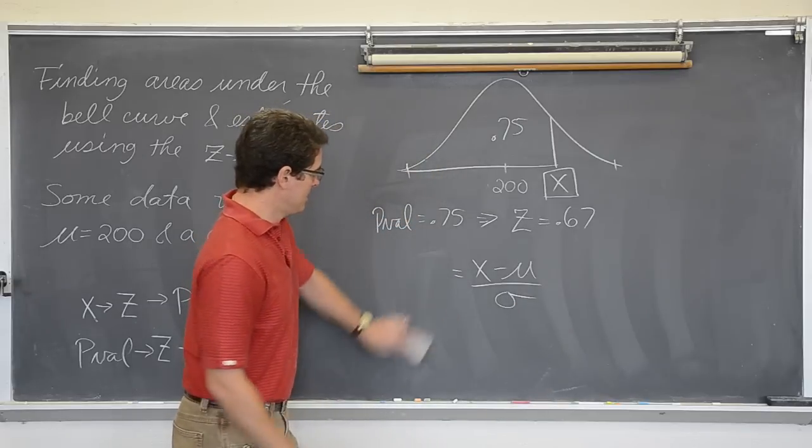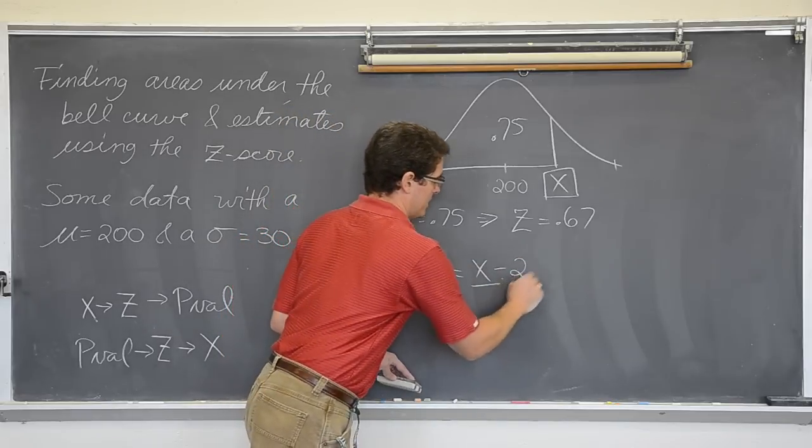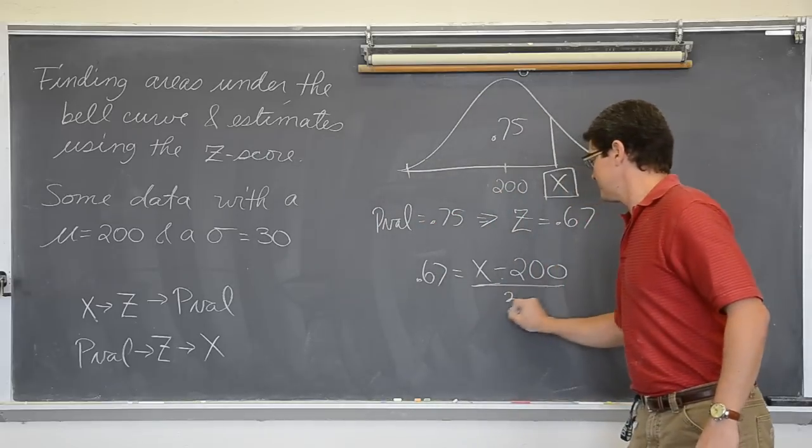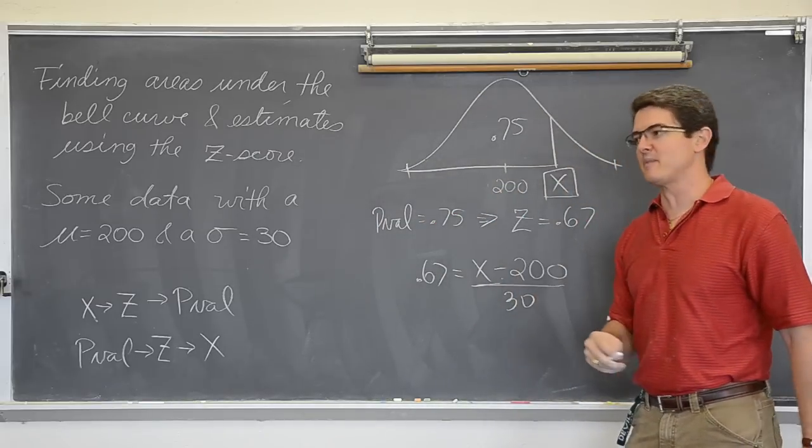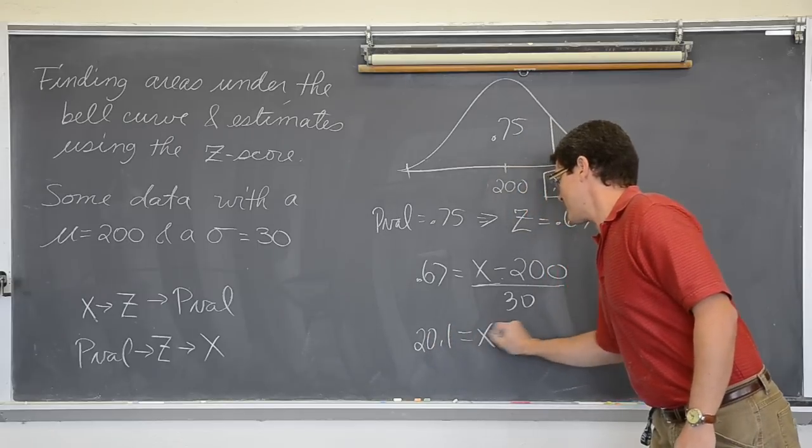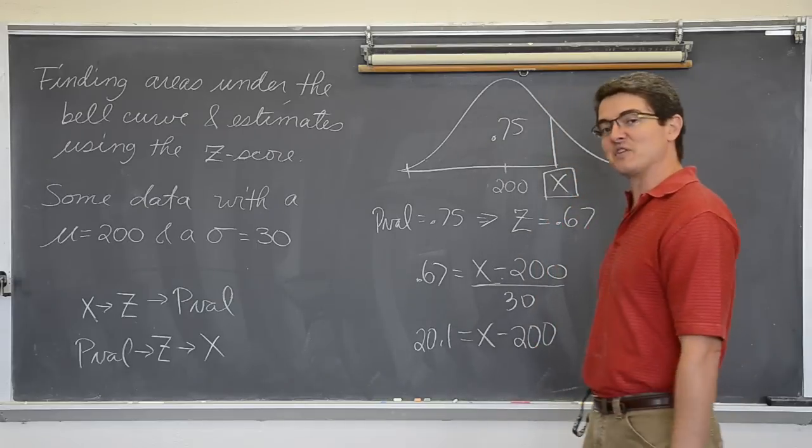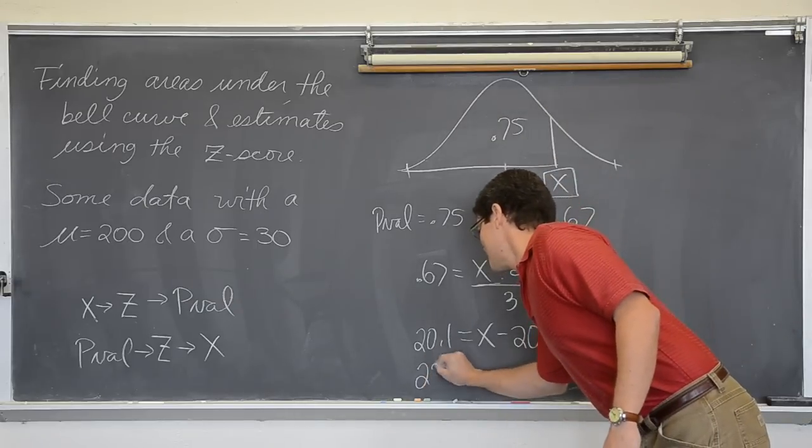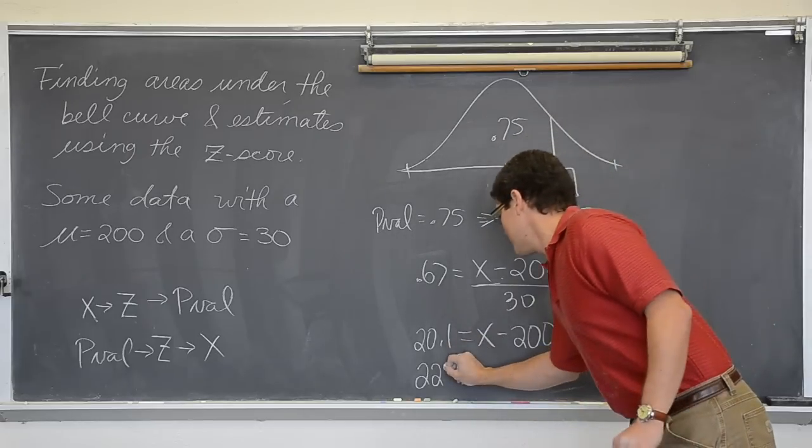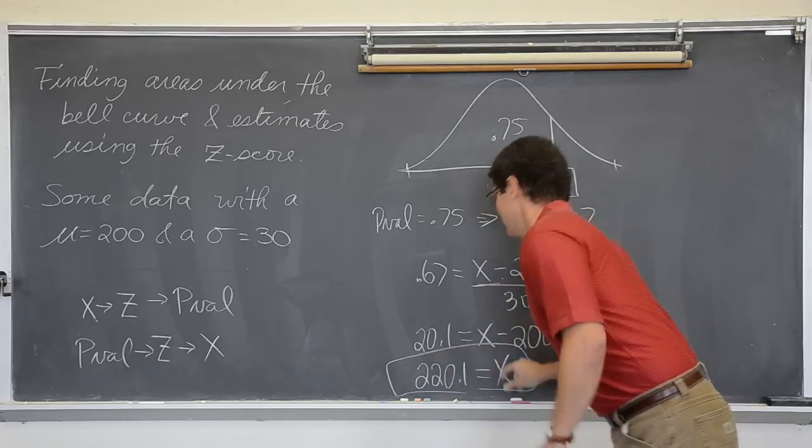Well, my z is .67, my mu is 200, and my standard deviation is 30. If I multiply both sides by 30, I get 20.1 equals x minus 200. And if I add both sides by 200, I might just finish on time. And my statistic, my 75th percentile, my q3, is 220.1. BAM!